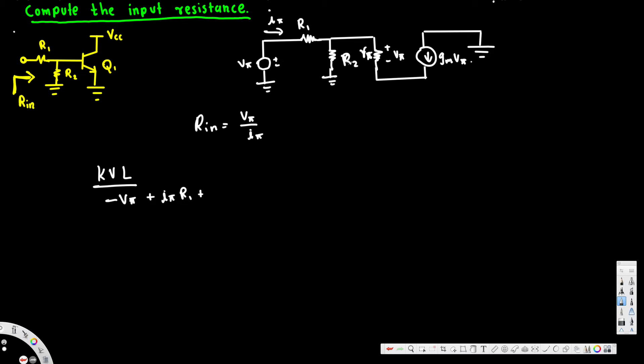We have R1 and R phi are actually R2 and R phi are parallel to each other. So that's going to be the next one, that is I phi times R2 and R phi parallel. That's equal to zero.